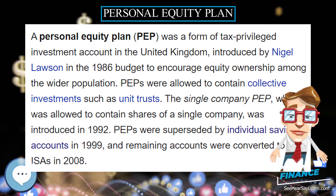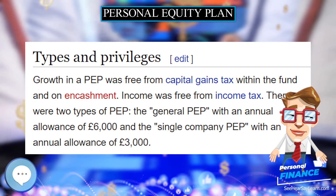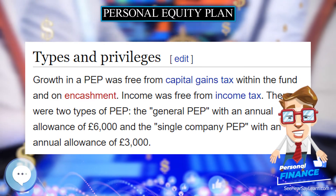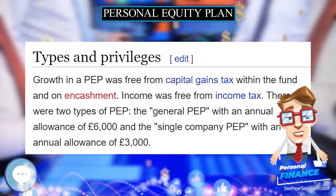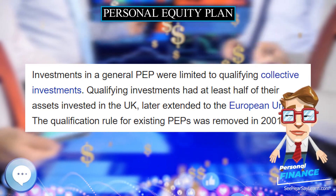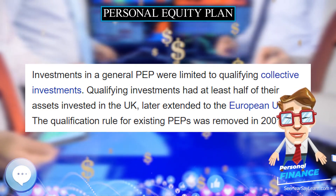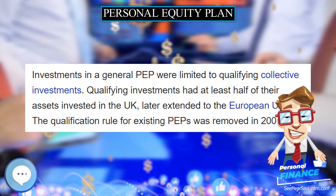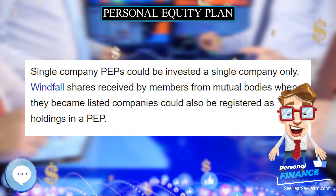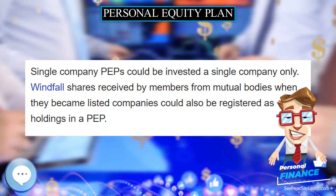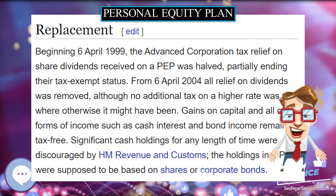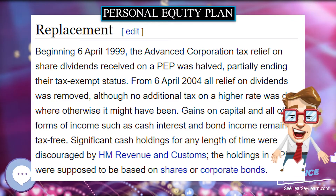Growth in a PEP was free from capital gains tax within the fund and on encashment. Income was free from income tax. There were two types of PEP: the general PEP with an annual allowance of £6,000, and the single company PEP with an annual allowance of £3,000.